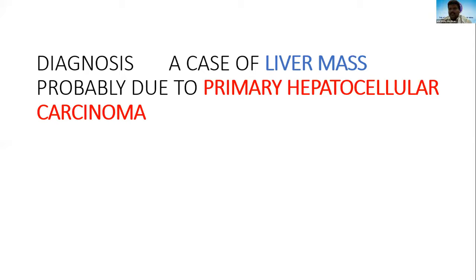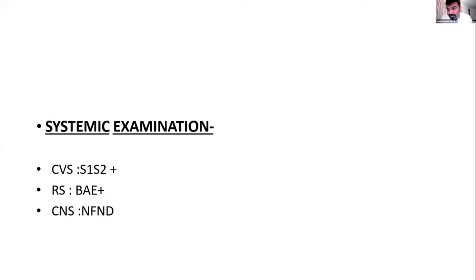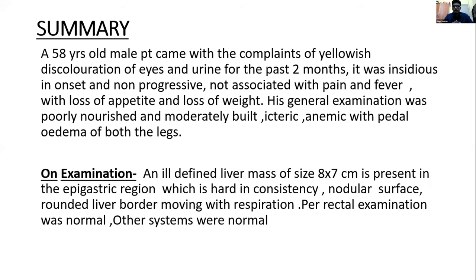The examiner asks: why do you say this is a liver mass clinically? The student replies: the mass occupies the epigastric and right hypochondriac region, it is ill-defined, fingers cannot be insinuated between the subcostal margin and the mass, percussion reveals a dull note over the mass continuous with the liver dullness, and the mass moves with respiration.